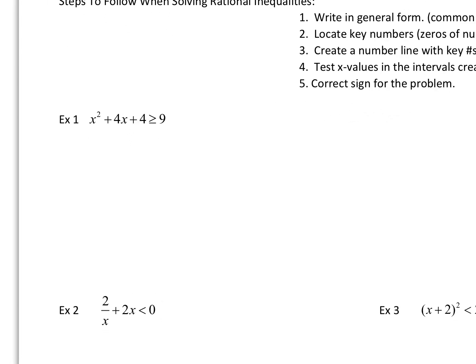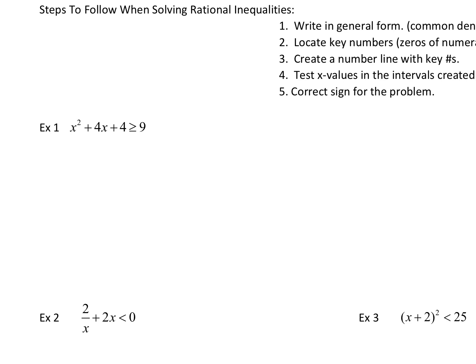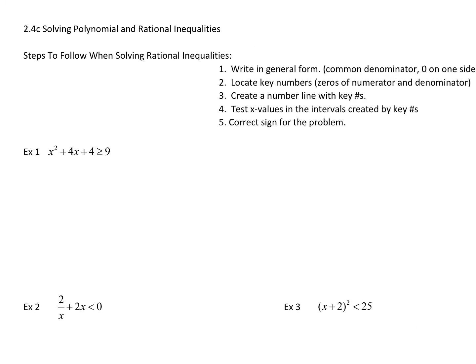x squared plus 4x plus 4 greater than or equal to 9. It's in general form and it doesn't have a denominator, so I don't have to worry about getting a common denominator. But I do need to move the 9 over, so I'm going to subtract 9. I'll have x squared plus 4x minus 5 is greater than or equal to 0.